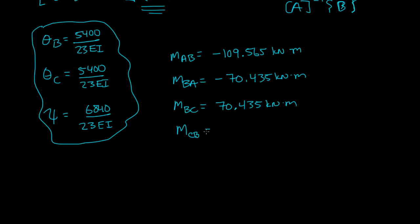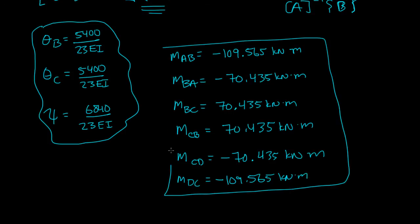MBC would be 70.435 kilonewtons per meter. MCB is equal to 70.435 kilonewtons per meter. And then finally you have MDC,